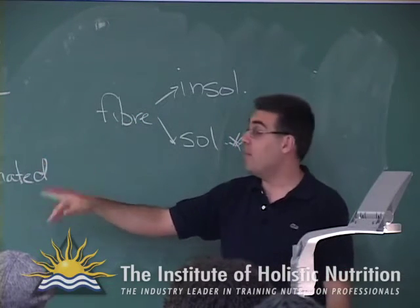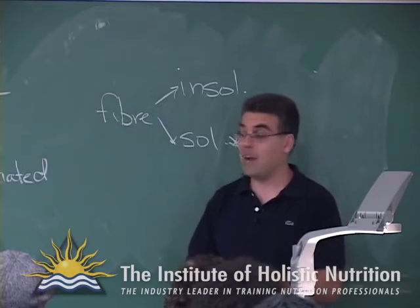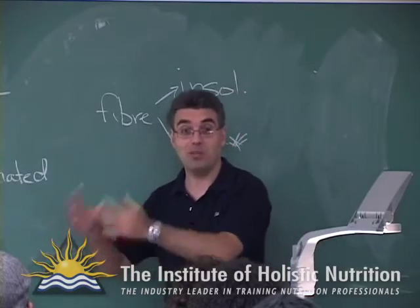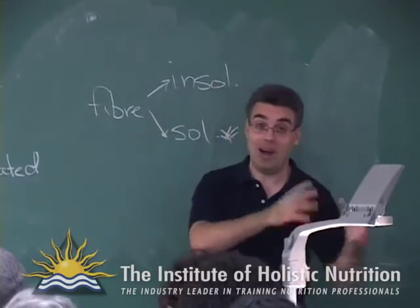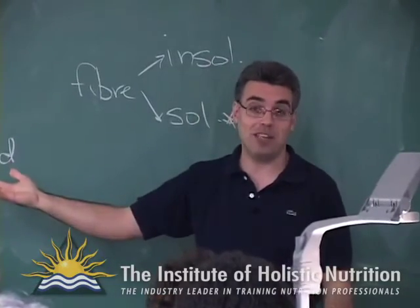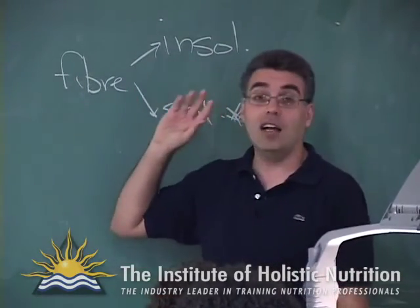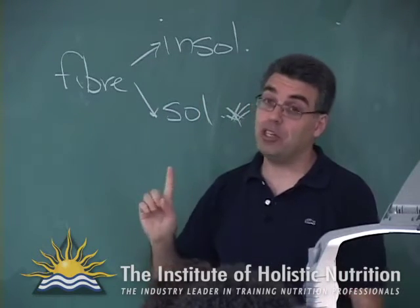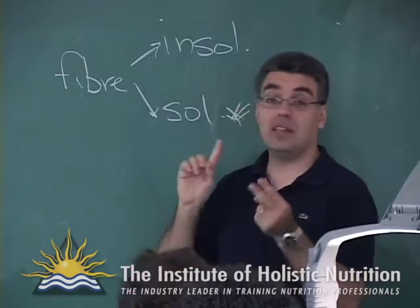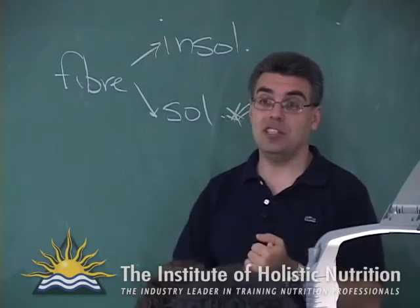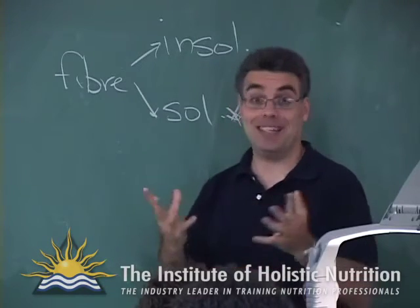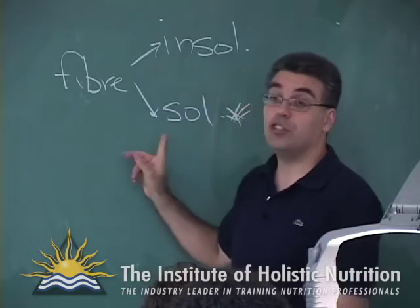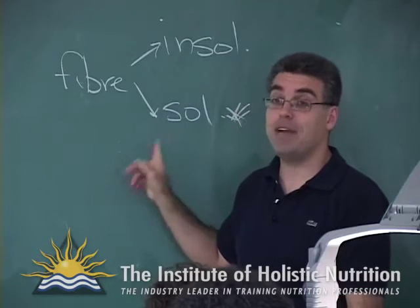Grains are not the best source of soluble fiber. The exceptions are oatmeal, ground flax, and some items like quinoa and millet, which have a slimy consistency when consumed. Generally speaking, you want soluble fiber, which comes from vegetables and fruit. People who buy white flour, then buy wheat bran to make bran muffins for constipation, are approaching it in the most ludicrous way in nutrition.